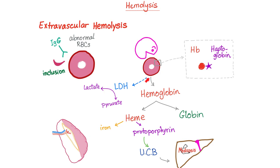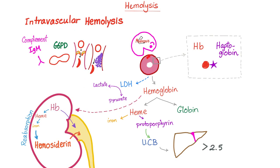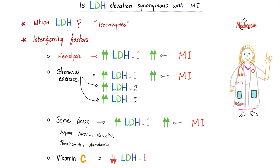Other causes of elevated LDH1: hemolysis. Red blood cells have LDH1. In extravascular hemolysis, the splenic macrophage destroys the red blood cell, releasing LDH1. Three labs for hemolysis: LDH1 elevated, unconjugated bilirubin elevated, haptoglobin decreased. Same pattern in intravascular hemolysis — the red blood cell is destroyed inside the vessel, releasing LDH1 — high LDH1, high unconjugated bilirubin, low haptoglobin. LDH1 elevation suggests MI but also consider hemolysis.